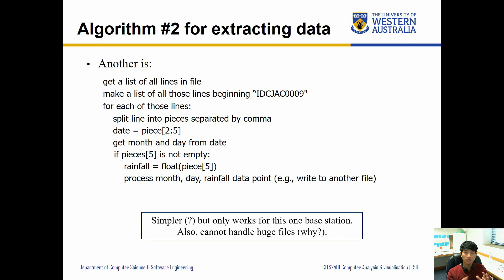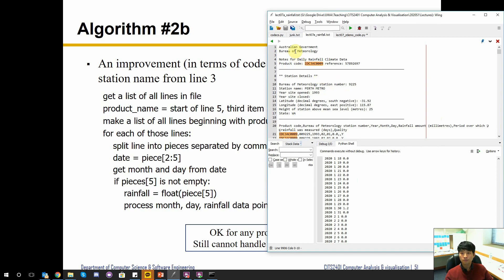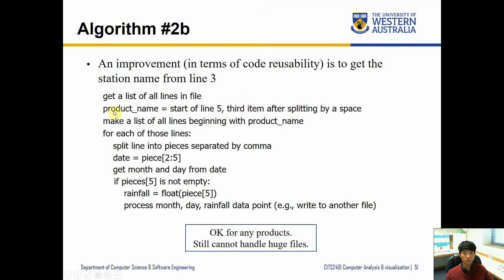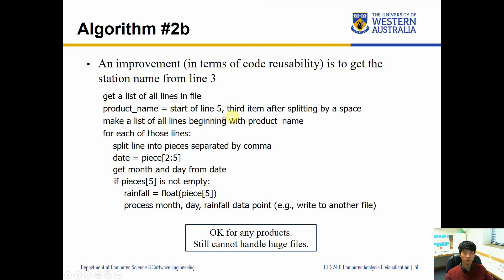As mentioned, the alternative approach requires loading all the data into memory space to be processed. If we have more lines, that's obviously going to be a problem. A slight improvement for code reusability is to get the product code dynamically from the file — for example from line five, where after 'product code colon' it gives the product code. We split by space and get the item at index two to save the product name, then collect all lines matching that product code and process them. This now works for any product, but it still cannot handle huge files.